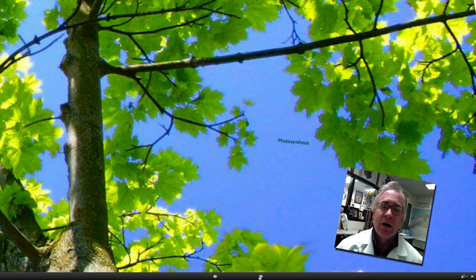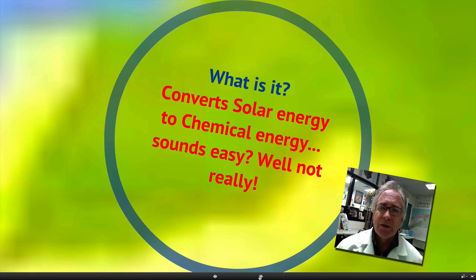Let's take a look at a working definition. Probably the best sentence is that photosynthesis is a process that converts solar energy into chemical energy. Sounds easy, but the actual process is quite complicated.